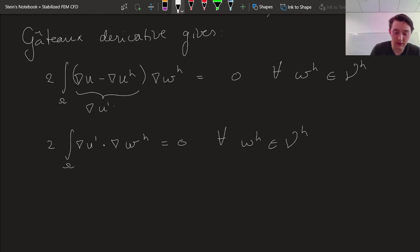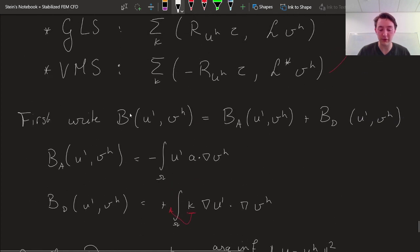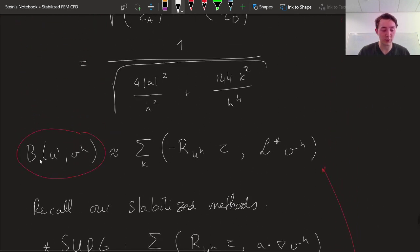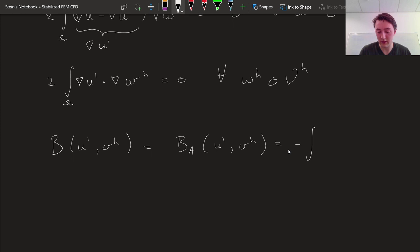So that means that B U' Vh is actually simply equal to B A U' Vh. And if we make use of this knowledge already very early in our derivation, then we don't end up with the complete differential operator acting on the test function here, because this was originated from this complete bilinear form U' Vh. That's how we ended up with the complete adjoint operator. But now we only have to take into account, well, minus U' A dot gradient Vh.